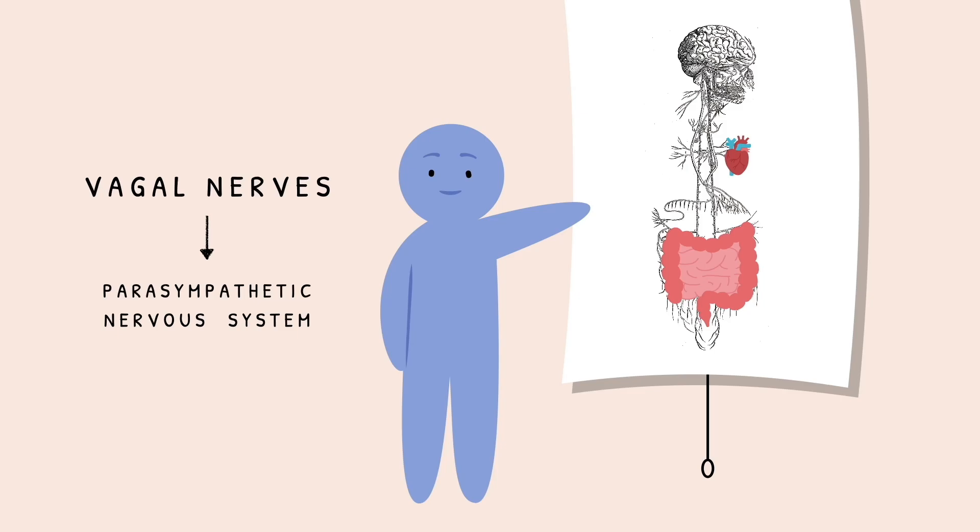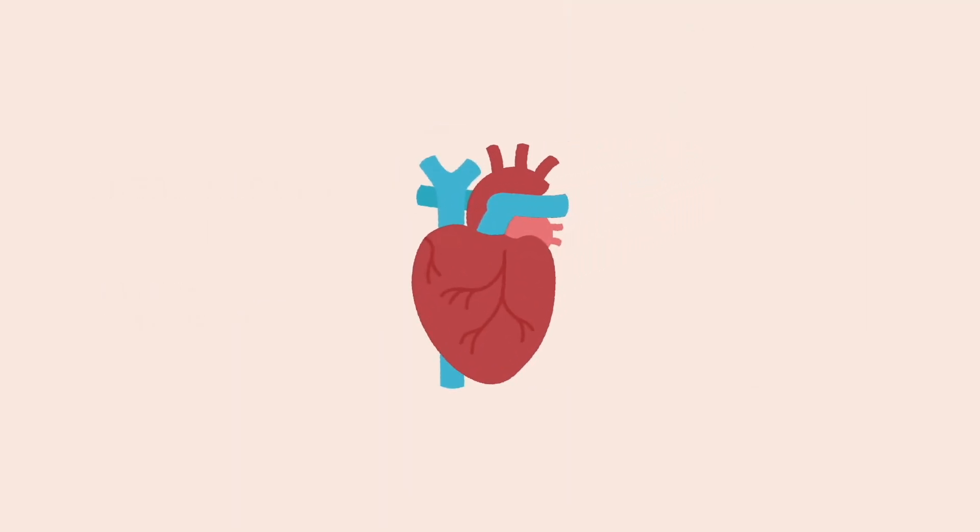One particular branch of the vagus nerve connects directly to the heart's natural pacemaker, called the sinoatrial node, where it helps regulate heart rate and rhythm. Without this vagal input, the heart's pace could increase uncontrollably. Because this branch can slow the heart and regulate its rhythm, it's often referred to as the vagal brake.